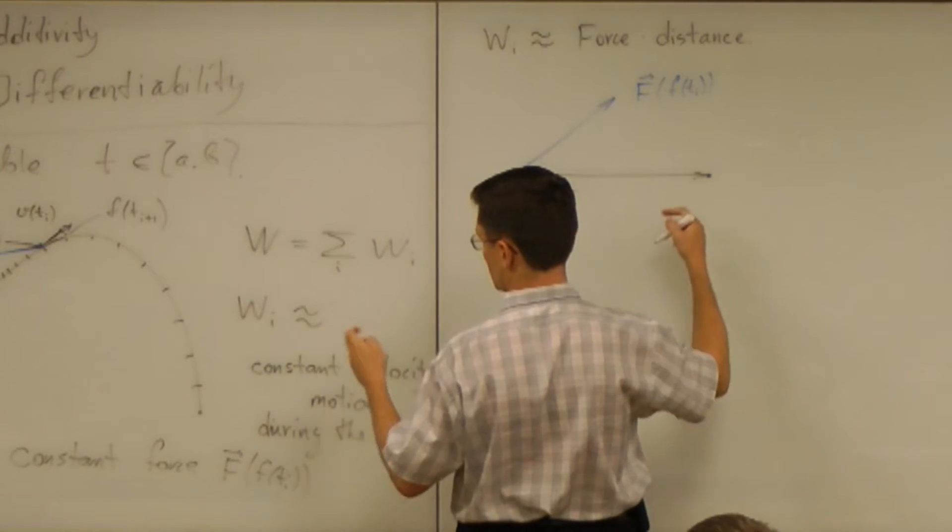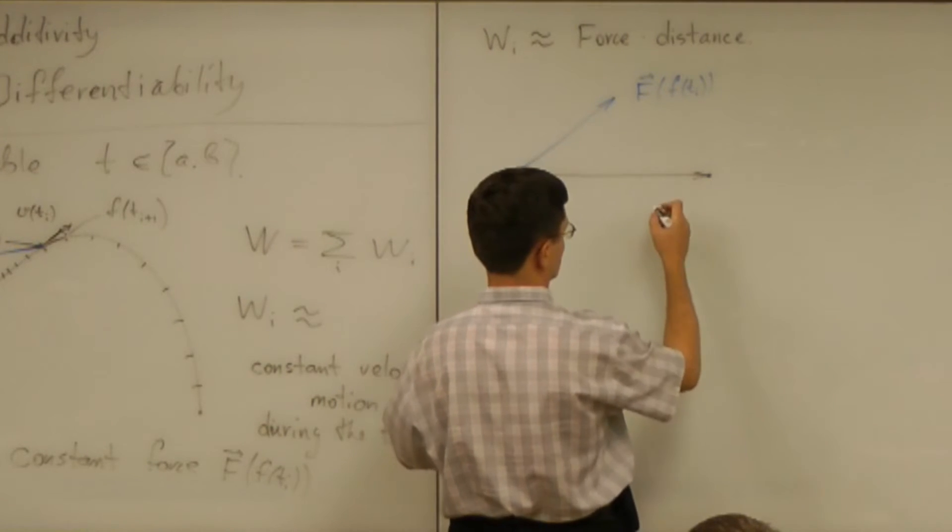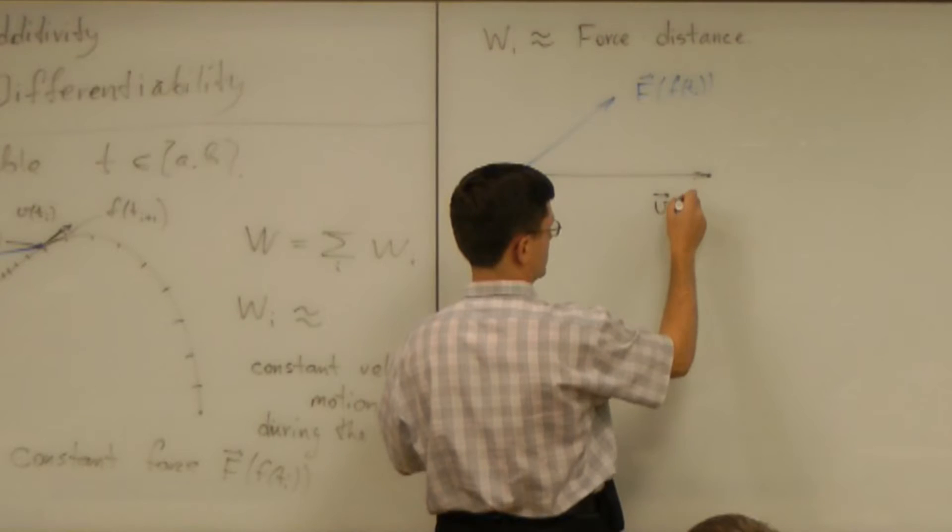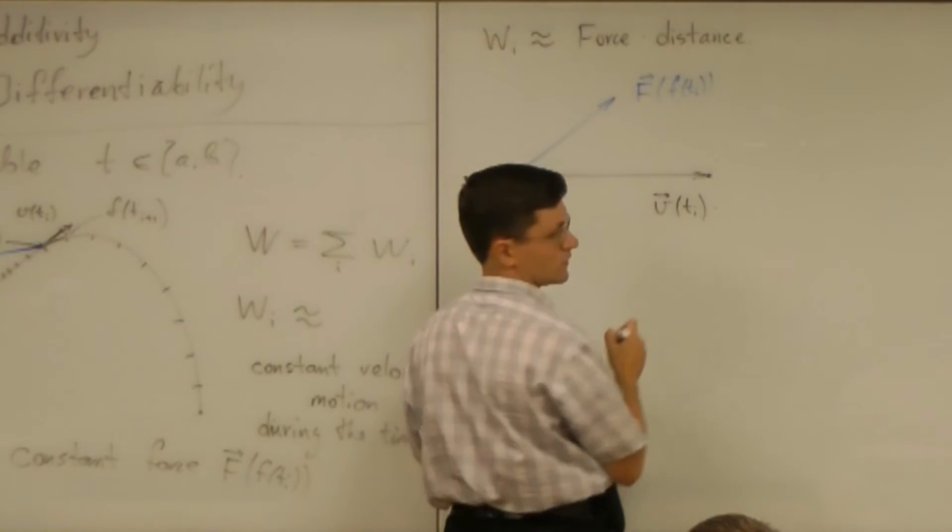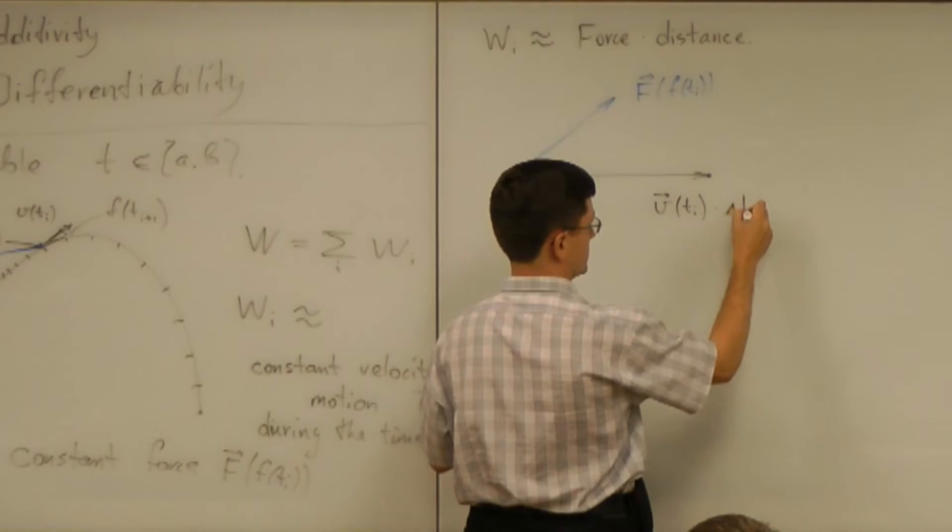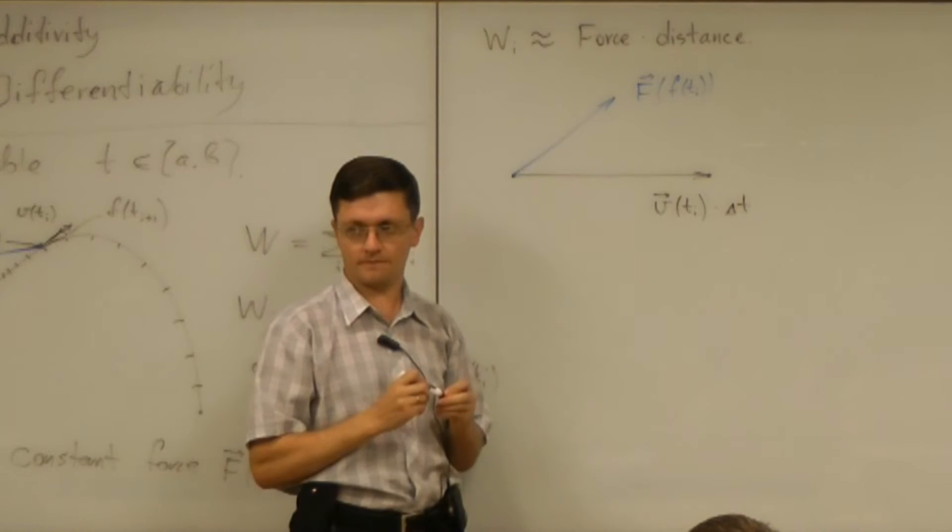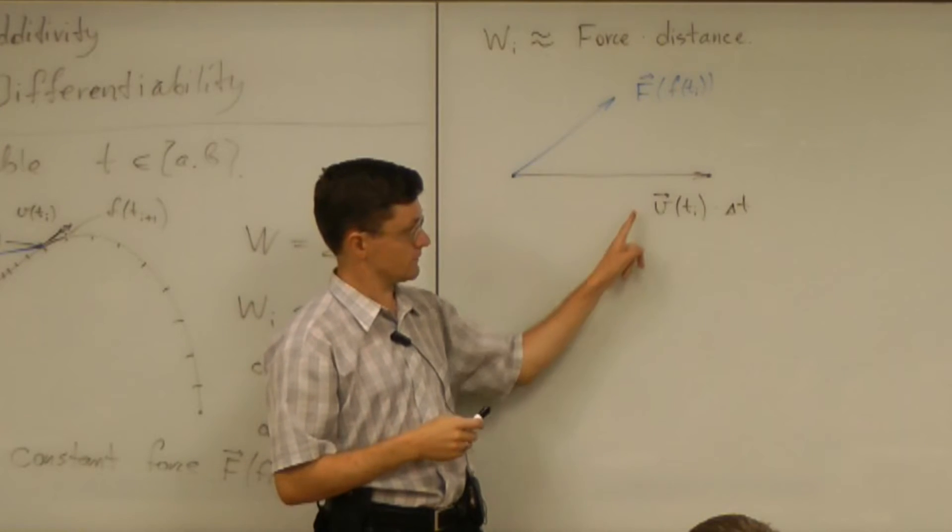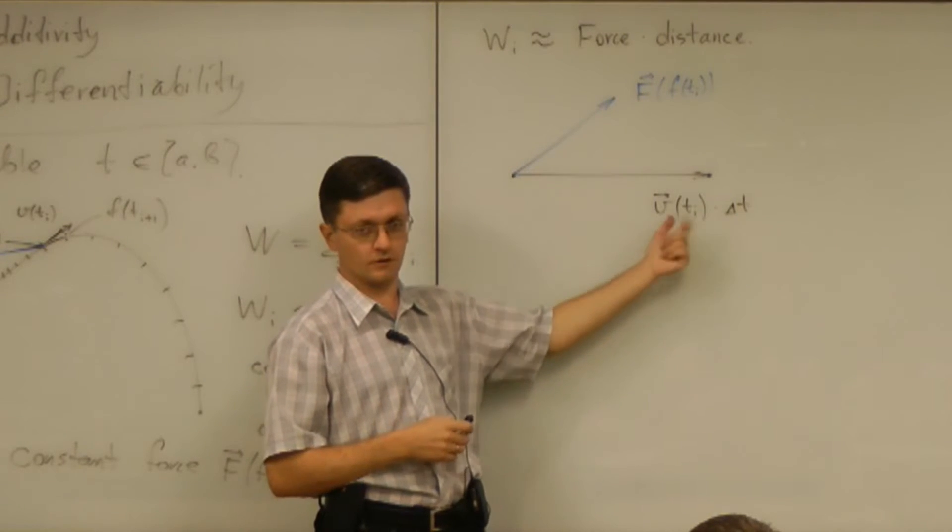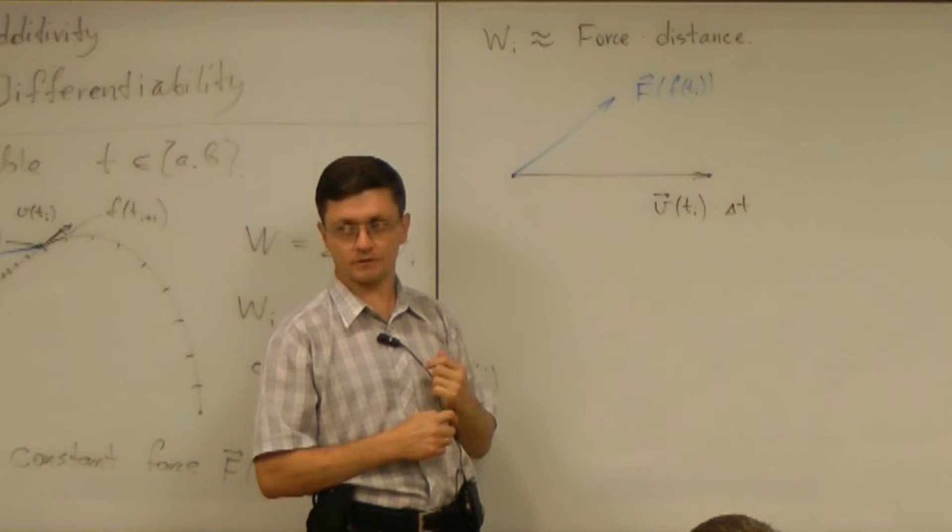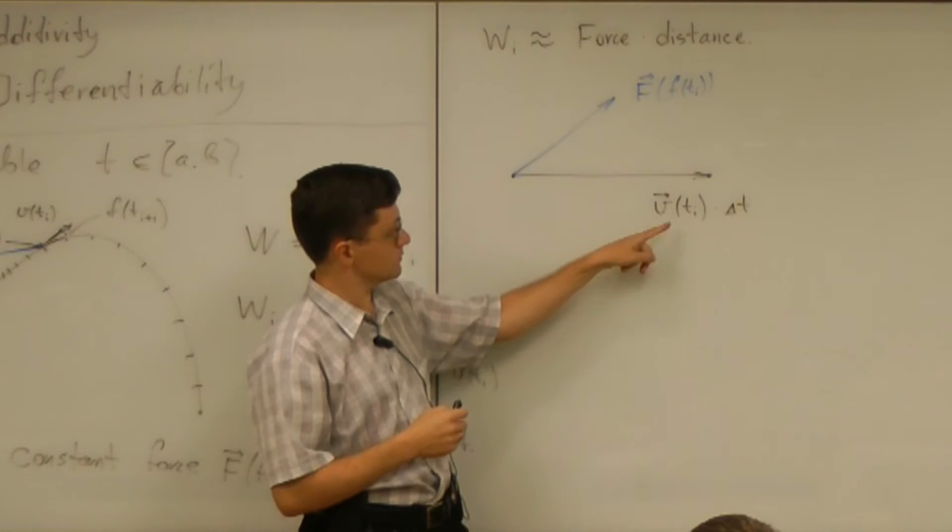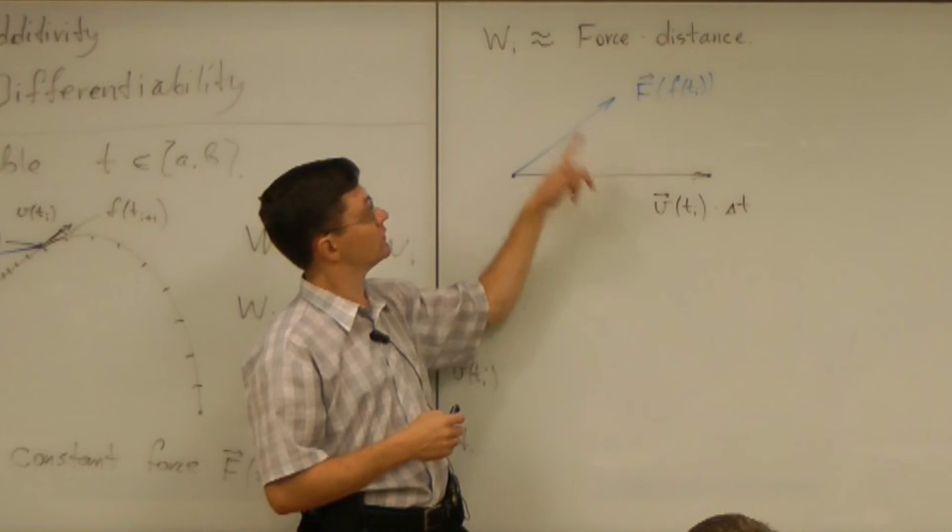Displacement is the velocity vector V of Ti multiplied by delta T. So now this is a vector multiplied by the time gives you displacement vector.